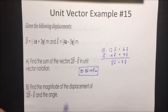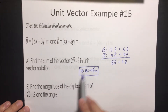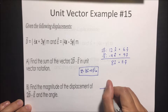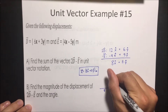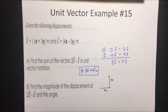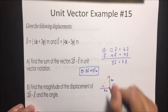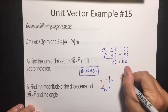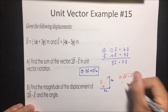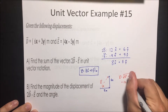Now find the magnitude of the displacement of 2D minus E and the angle. Once we have it in unit vector notation, we convert it back to magnitude-angle form. We put 8 in the x direction and 11 in the y direction, then use the Pythagorean theorem: √(8² + 11²), which gives us 13.6 meters.